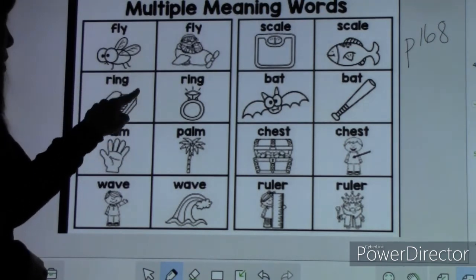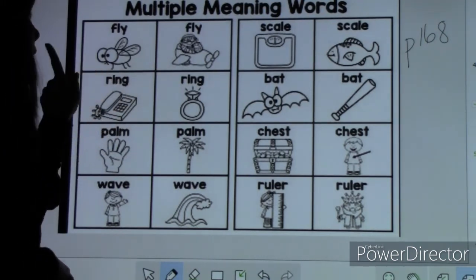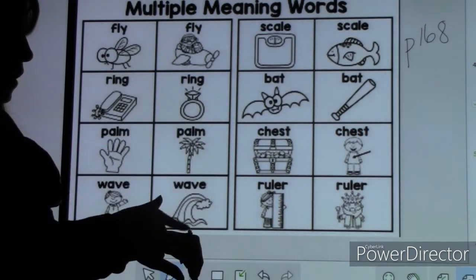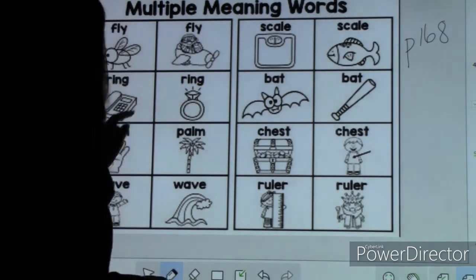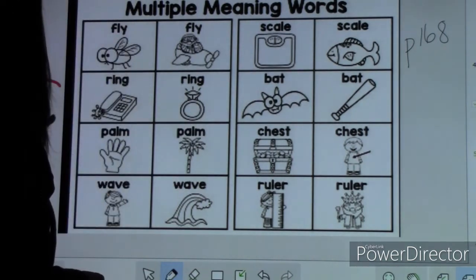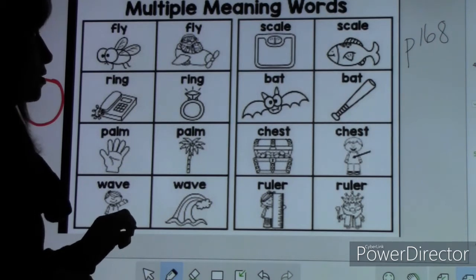We have ring, like when a phone rings, that sound. And we have a ring, like the one you wear on your finger. There's also a word ring, like draw a ring around the correct answer. That circle is also called a ring.